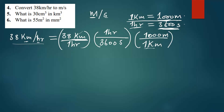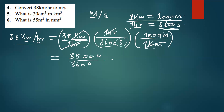I can see that the one hour terms cancel, and the kilometer terms cancel. What remains are the numbers, meters, and seconds. It's just a matter of multiplying: 38 times 1000 gives 38,000, divided by 3600. Cancelling zeros gives 380 divided by 36, which simplifies to 95 over 9 meters per second, or as a decimal, 10.6 meters per second.